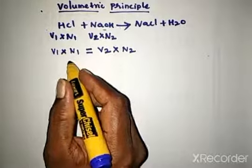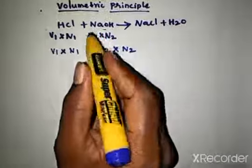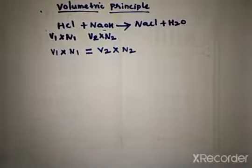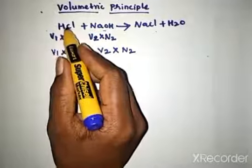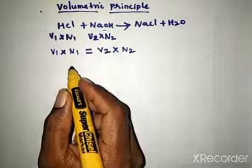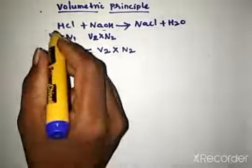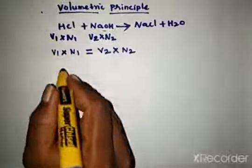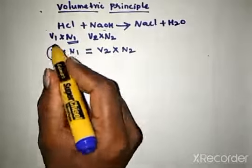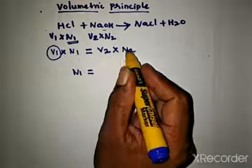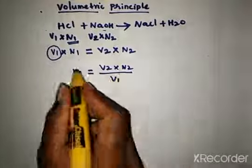If we do not know the normality of HCl, we can find it; similarly for NaOH. In the titration between HCl and NaOH, one solution should be standard and the other should be the unknown. If the normality of HCl is unknown, and we know V1, V2, and N2, we can rearrange V1N1 = V2N2 to calculate N1, the normality of HCl.